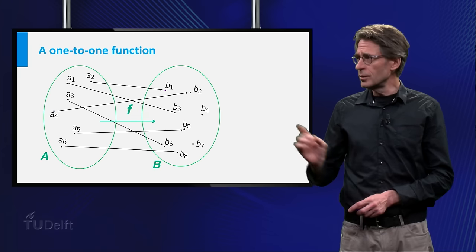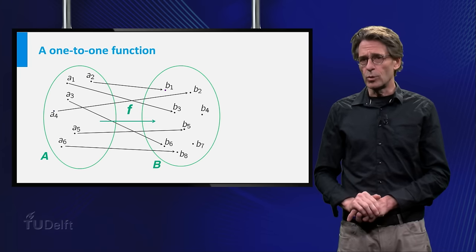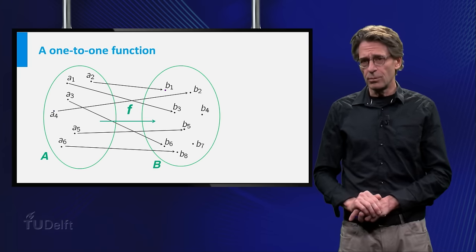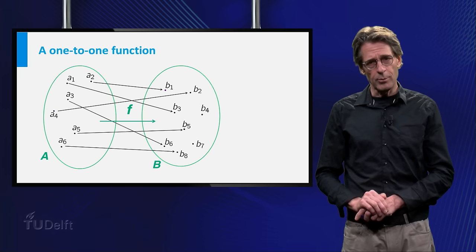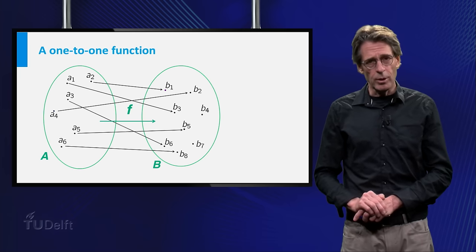The slide shows a typical 1 to 1 function. For each b sub i in the codomain, capital B, there is at most one arrow.